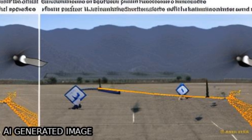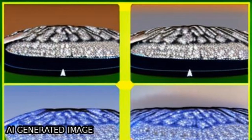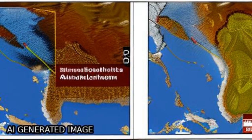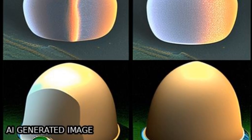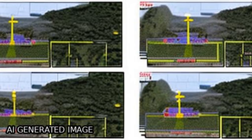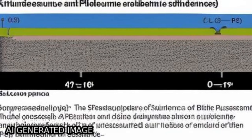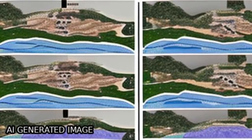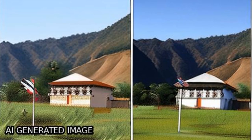This study applied SBAS-InSAR technique to estimate land subsidence in the Kathmandu Basin before and after the Gorkha earthquake, using ALOS-1 Phased Array L-Band Synthetic Aperture Radar (PALSAR) images during the pre-seismic period, and Sentinel-1A InSAR images during pre- and post-seismic periods.